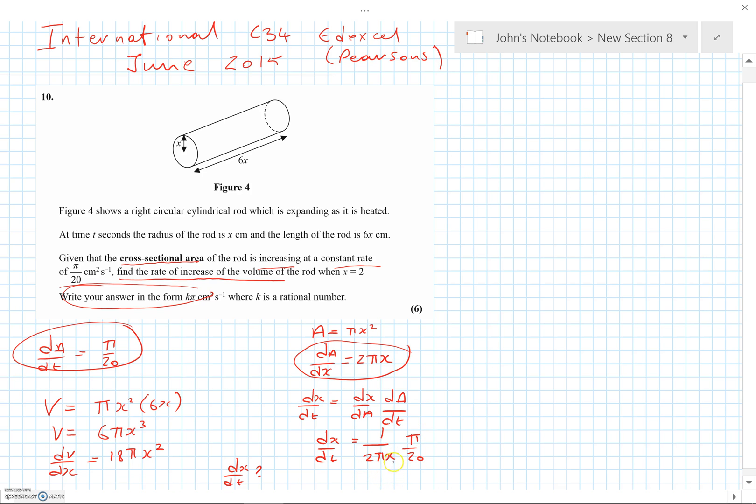So that's quite nice because the π's cancel. So we get that is equal to 1 over 40x. So dx/dt is 1 over 40x.